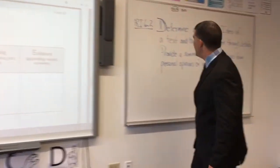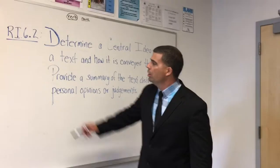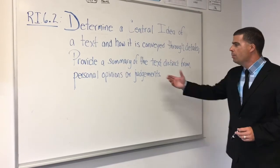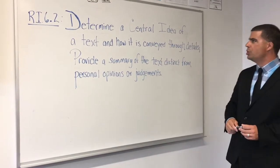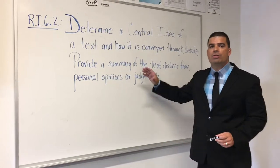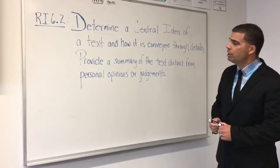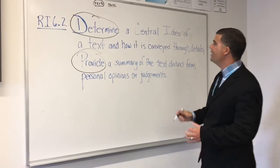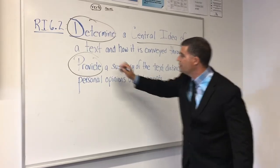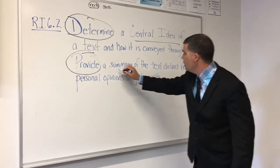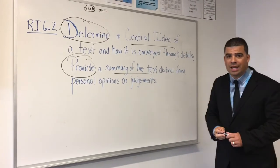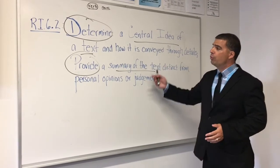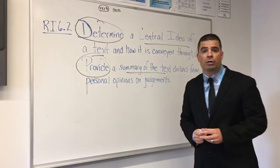Come over here and let me show you exactly what we mean. Here's a reading standard, RI 6.2: 'Determine the central idea of the text and how it's conveyed through the details. Provide a summary of the text distinct from personal opinions or judgment.' We would break this down into multiple learning targets. We circle the verbs and underline the nouns — so here's 'determine' and here's 'provide,' then we underline the nouns. 'Determine the central idea of the text' and 'provide a summary of the text' — we would have two learning targets right there. We would expect kids to be able to do this, know what success looks like, and also self-grade themselves looking at the learning targets for the unit.